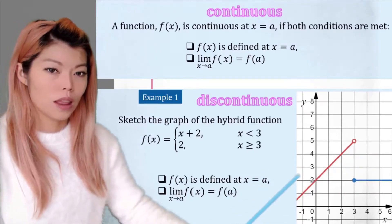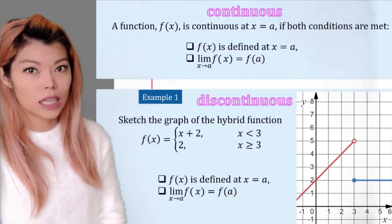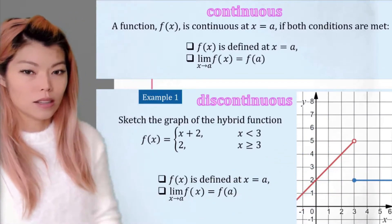We can see that from the left side, we're approaching 5, and from the right side, we're approaching 2. So the limit does not exist.